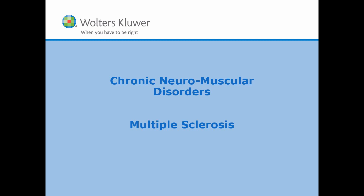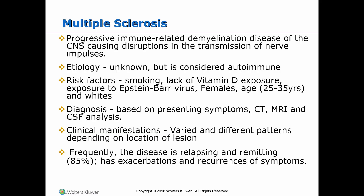Today's topic is multiple sclerosis. Multiple sclerosis is a progressive immune-related demyelination disease of the CNS, causing disruption in the transmission of nerve impulses depending on the nerves affected. The etiology is unknown but is considered autoimmune.